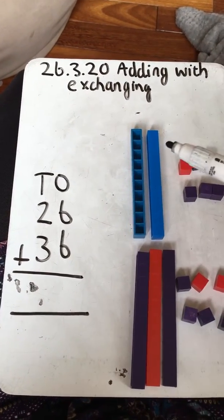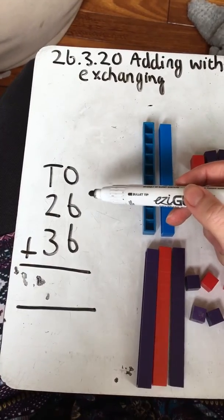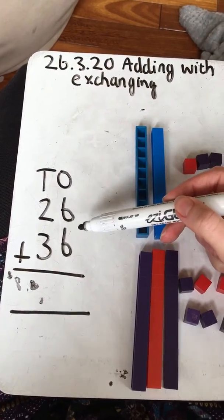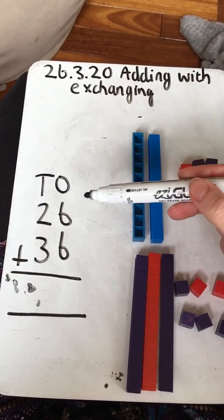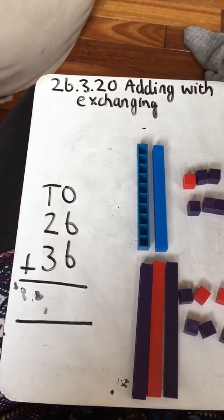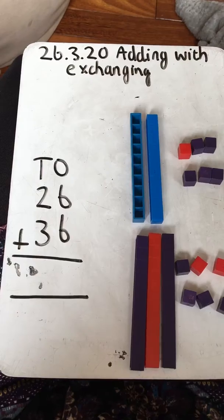The first thing we do when using the column method is we always add the ones. And with the tens here I'm going to show you what I'm doing. So six plus six, if you know your double facts really well, that is 12.